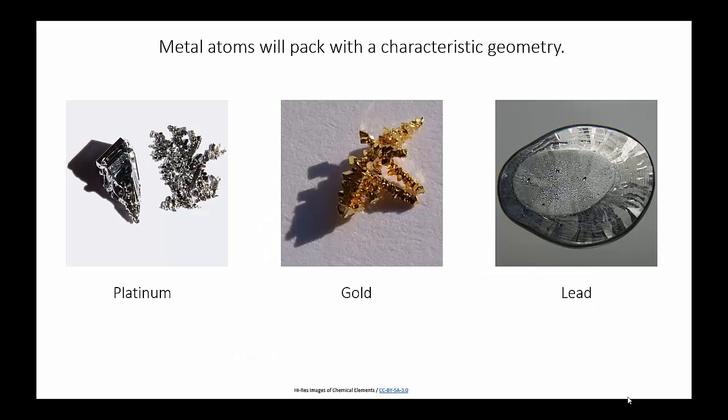Also like ionic substances, different metals can form lattices with different geometries. This also means that when metals are grown into crystals, they exhibit characteristic shapes.